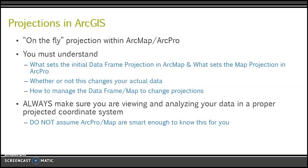One important thing to understand about projections in ArcGIS is the concept of on-the-fly projection. In ArcPro, your map has a defined coordinate system based on the base map that comes in by default. In ArcMap, it's driven by whatever dataset you add first. You always have control — you can get into map properties and toggle it to the coordinate system of one of your datasets, and I recommend doing that. You really want to make sure you're always viewing and analyzing your data in a proper coordinate system.